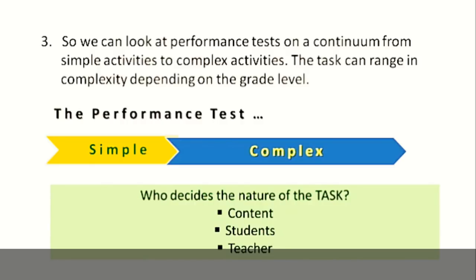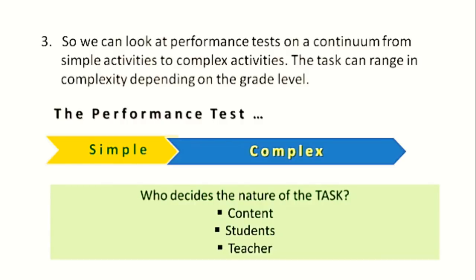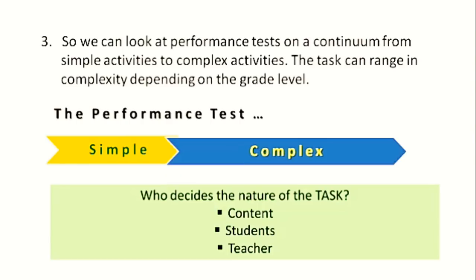Performance tasks can be seen on a continuum from very simple to complex activities, with the range depending on the grade level. A child in class 2 would have a different type of performance task than a child in grade 3, 4, or 5. Three things determine the nature of the task: the content, the students, and the teacher — all three are responsible for deciding the nature of the task.